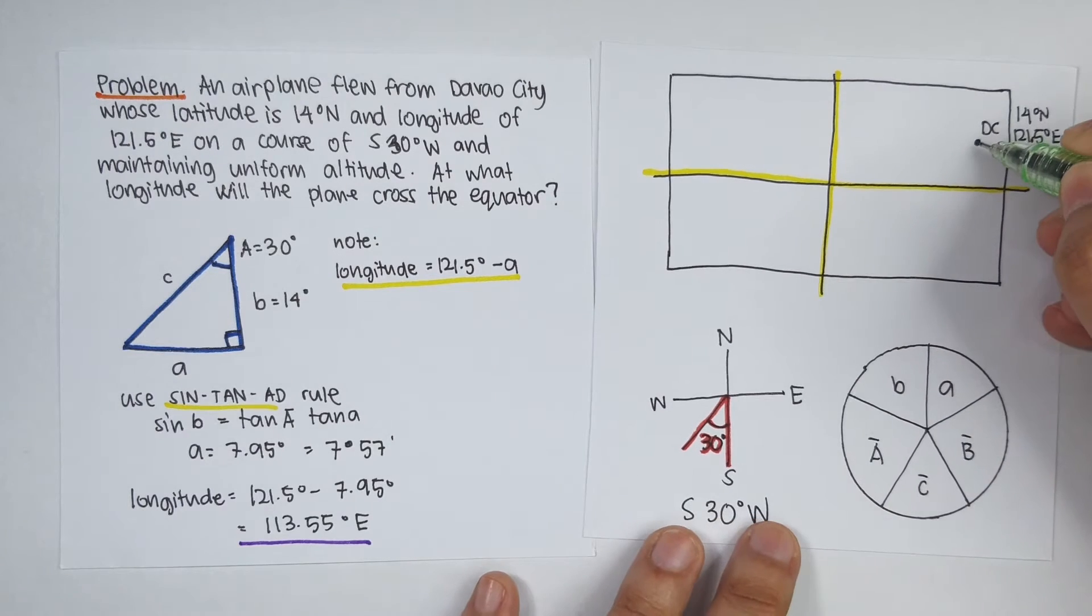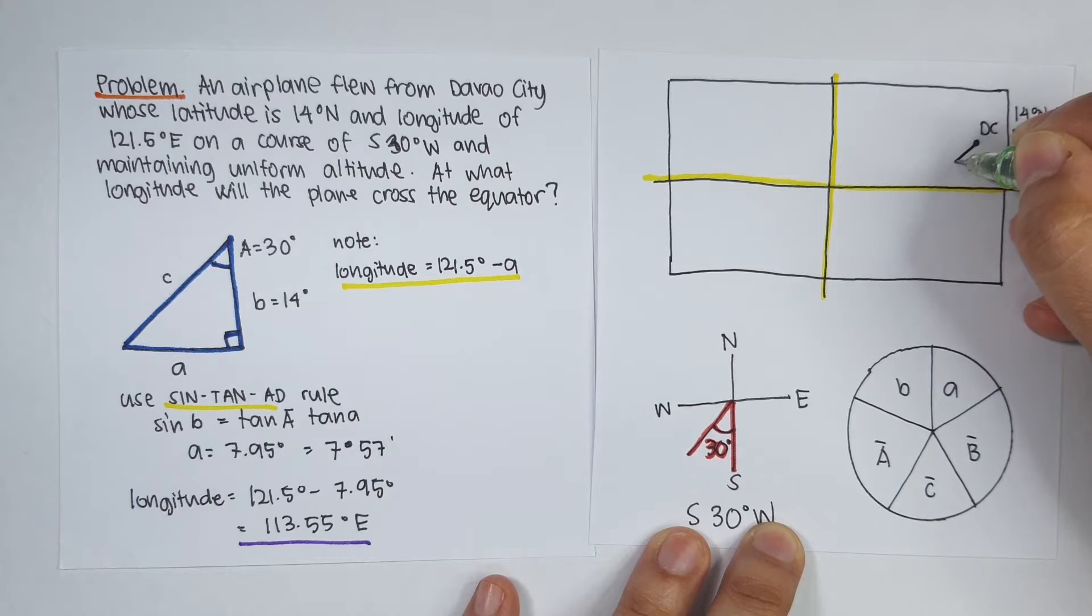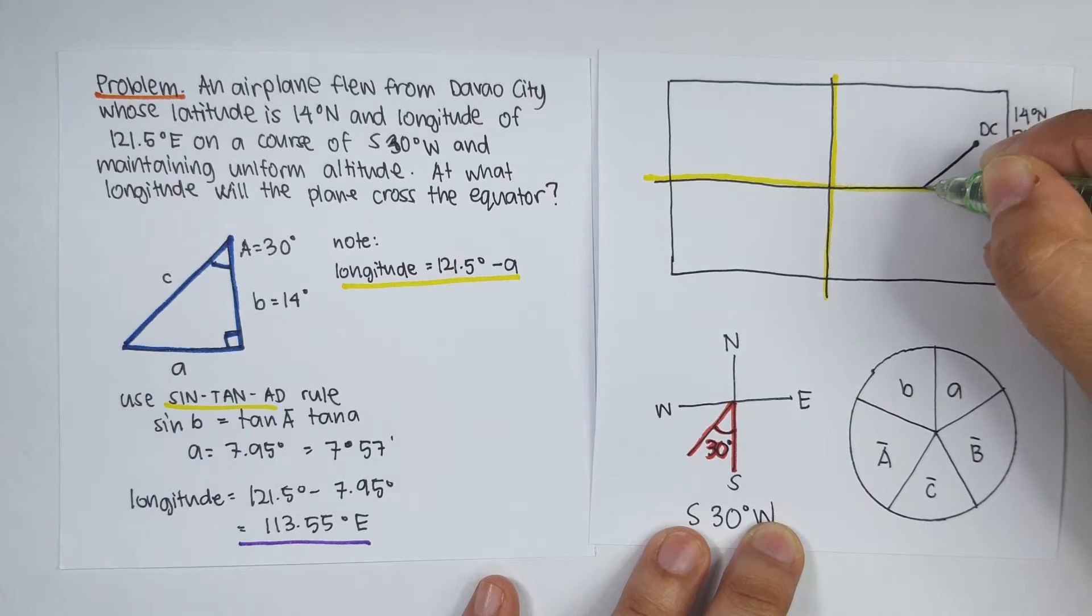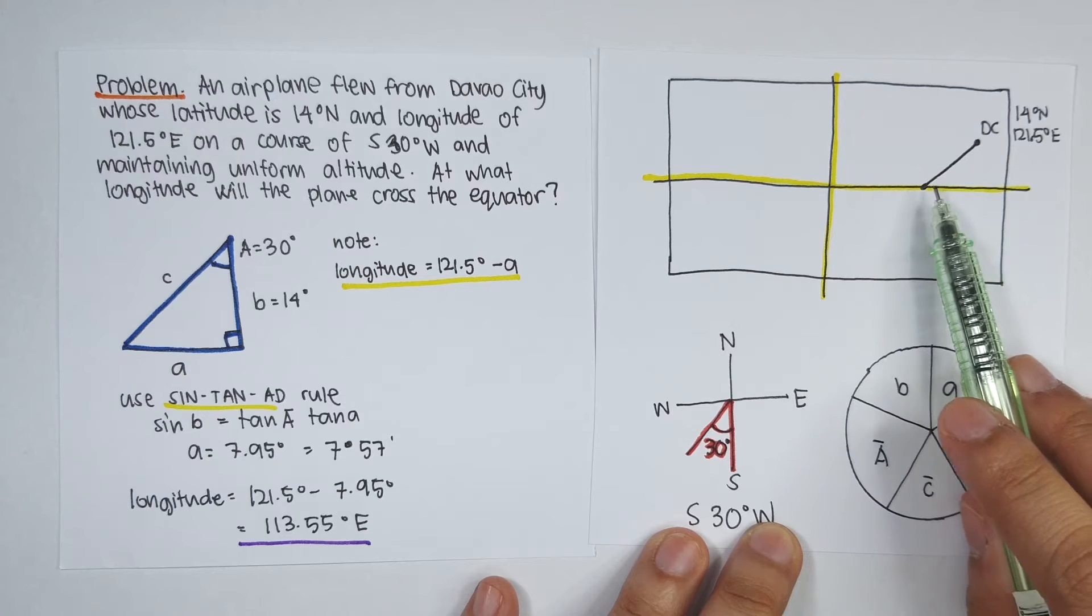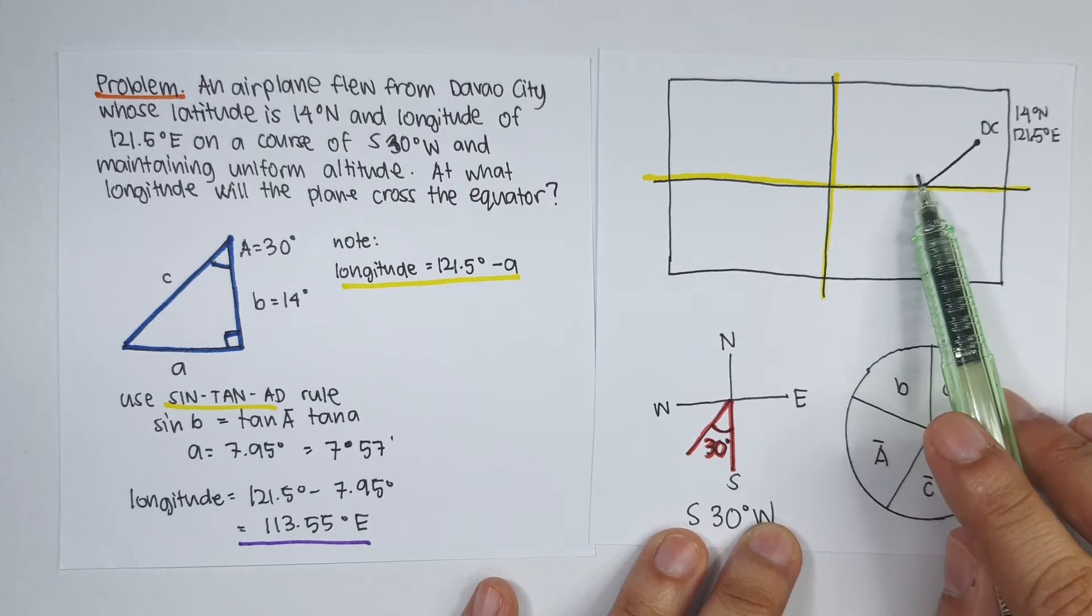So your plane is from Davao City. It has a course of 30 degrees west of south and it crossed the equator at a certain point. The question is, what is the longitude of this point? So that is from here to here.